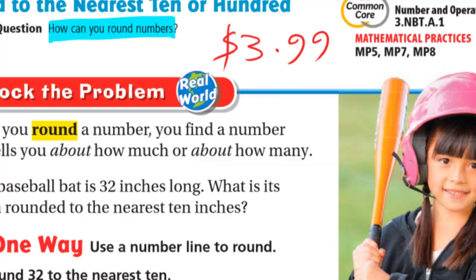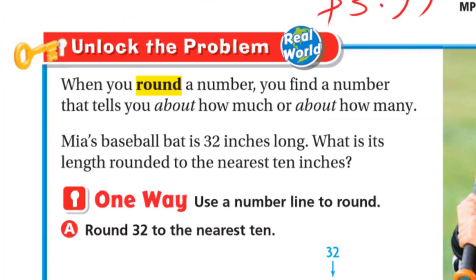If we have three dollars and 99 cents, we say that this is approximately four dollars — it's about four dollars. That is the idea of rounding. We round it to the nearest dollar. What is the closest dollar: one, two, three, four, or five dollars? We see that the closest one is four dollars.